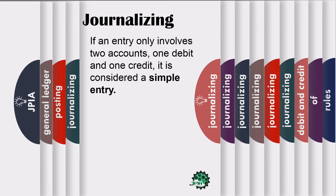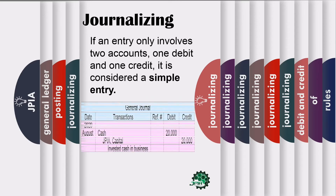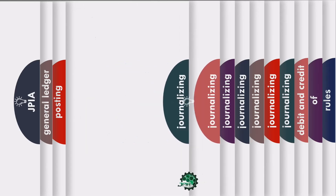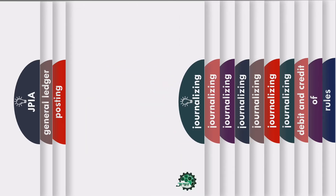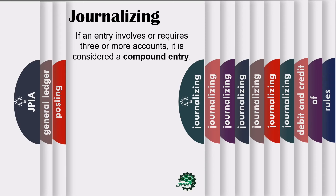If an entry only involves two accounts — one debit and one credit — it is considered a simple entry. Only two accounts are affected here. Meanwhile, if an entry involves or requires three or more accounts, it is considered a compound entry. Moreover, it always depends on the transaction.